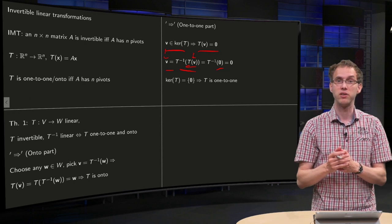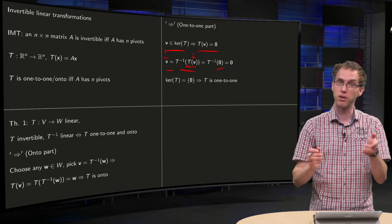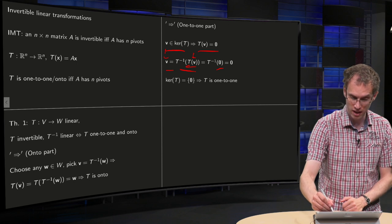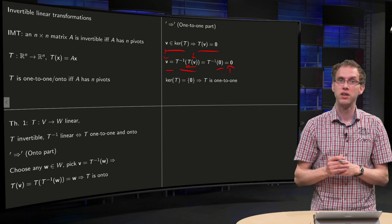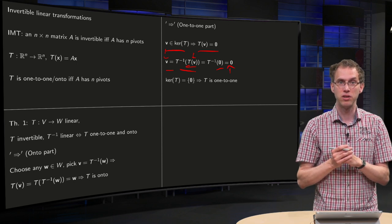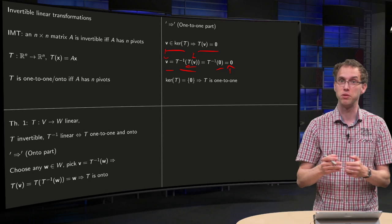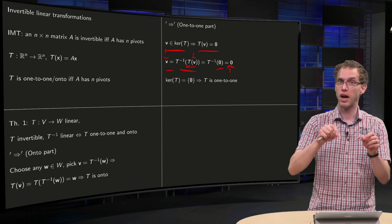And now you use the fact that you have this T inverse. T inverse of zero, T is linear, so this is again the zero vector. So, if v is in the kernel of T, the only option you have is that v has to be the zero vector. Because what's happening, you start with the v, it's mapped to zero, so now you are at the zero vector.